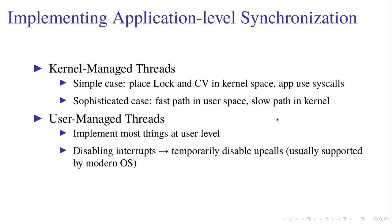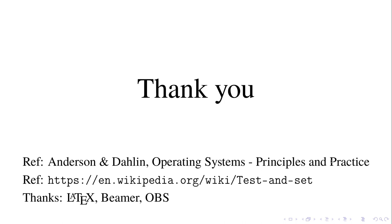Another way is user managed threads, where we implement most things at the user level. The only thing we cannot implement at user level is disabling interrupts — this applies to both unicore and multicore. What we replace it with is temporarily disabling all signals used for switching threads. Other interrupts will still go through but will not affect the thread library. Temporarily disabling signals is usually supported by modern operating systems. That's all of my presentation, thank you very much.